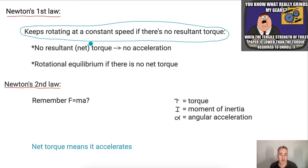And of course, this means it's called rotational equilibrium. Something is in rotational equilibrium if there's no net torque.